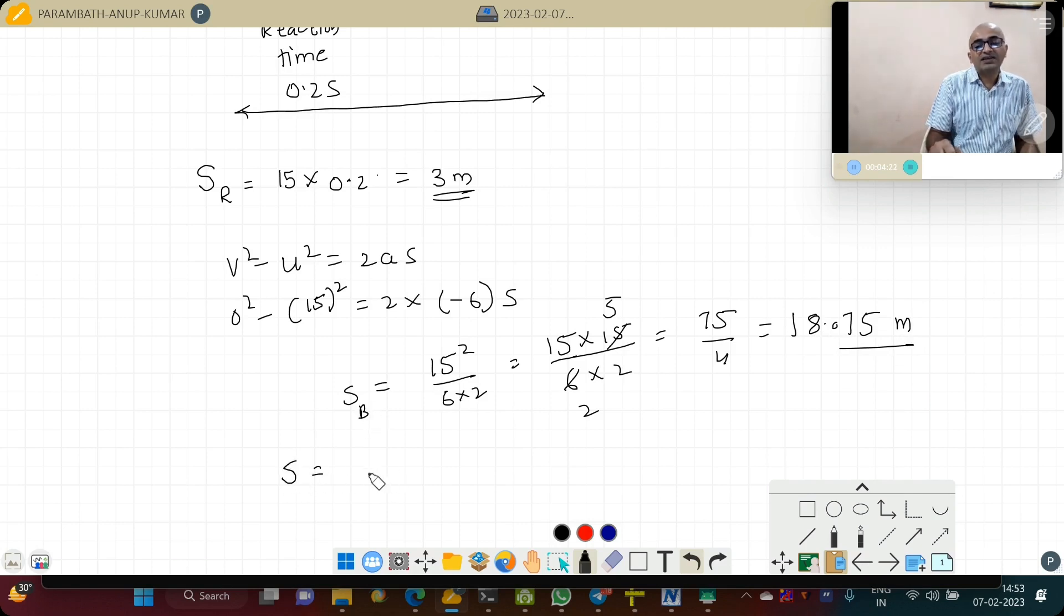So total distance traveled is 18.75 meters plus 3 meters, that is 21.75 meters. This is the total distance traveled in the braking time until the vehicle stops. I hope the idea is clear to you, students.